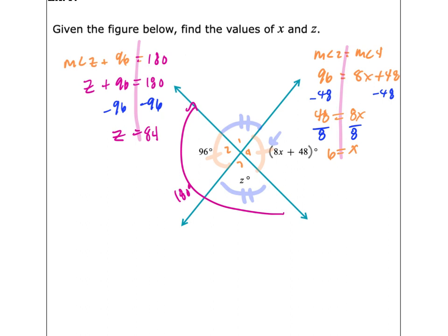To find x: 96 equals 8x plus 48. Subtract 48 from both sides to get 8x equals 48. Divide both sides by 8 to get x equals 6. For z: z plus 96 equals 180. Subtract 96 from both sides and z equals 84 degrees. You're showing that you can still solve an equation from chapter two, but now you're applying it to geometry.